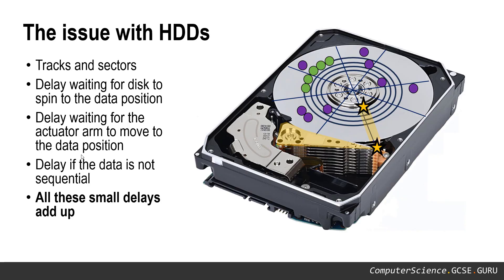Before we look at the pros and cons in more detail, let's take a quick look at how a magnetic hard disk drive actually works in practice. On this diagram you can see tracks and sectors on the disc surface. The actuator arm swings across to read or write data. Although a hard drive disc spins incredibly fast, accessing data is not instant — there is still a delay waiting for the disc to spin to the appropriate place where your data is saved, and another delay for the arm to swing to the correct track.